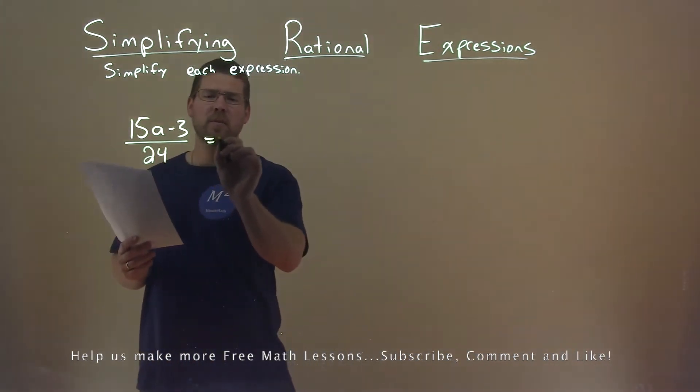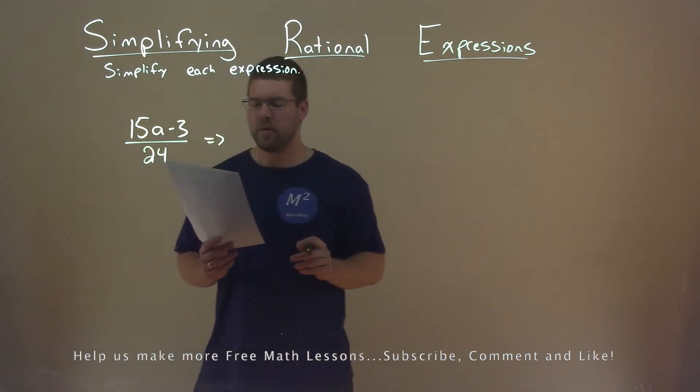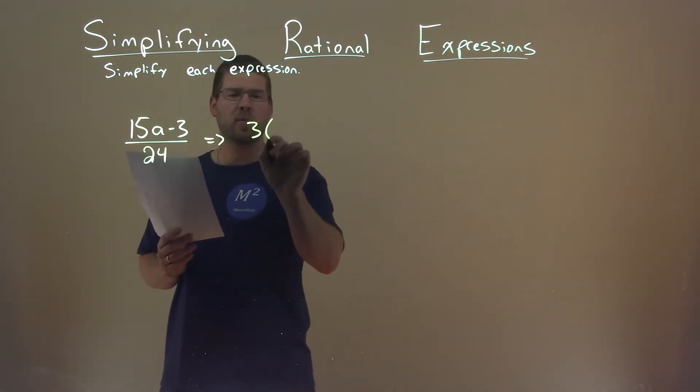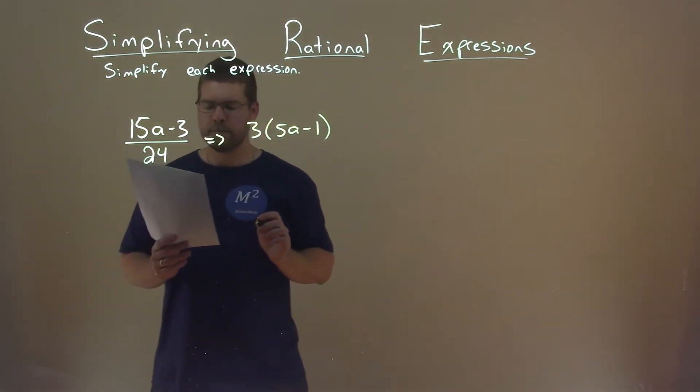Well, the numerator - let's see if we can pull anything out and simplify it. 15a minus 3. I can pull out a 3 in the numerator, and I'm left with 5a minus 1 here.